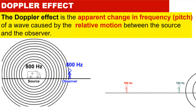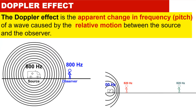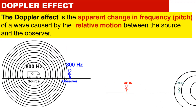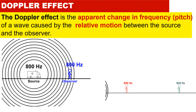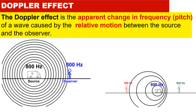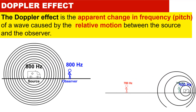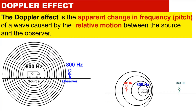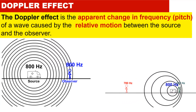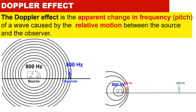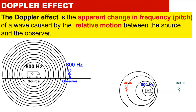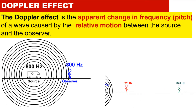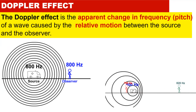If there is no relative motion between the source and observer, there will be no apparent change. It simply means that the frequency produced by the source and the frequency observed by the listener will be the same if there is no relative motion.